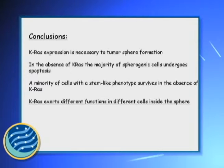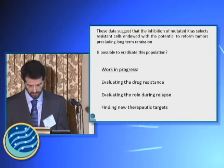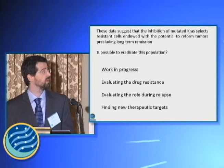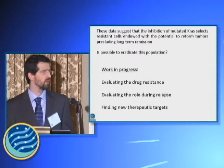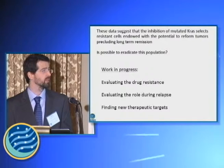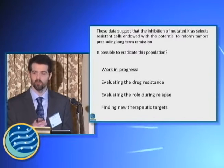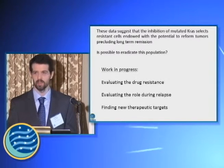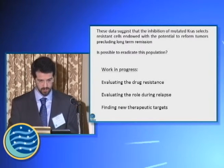KRAS seems to exert a different function in different cells inside the sphere. Our goal is to understand if it is possible to eradicate this population. At the moment, we are working to evaluate the drug resistance of this population. We also have data about the role of this subpopulation during tumor relapse. We want to gene-profile this population and find the molecular mechanisms that regulate their behavior, as well as find new therapeutic targets to eradicate these quiescent cells.